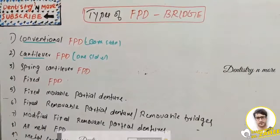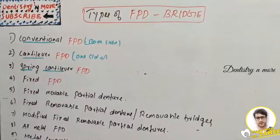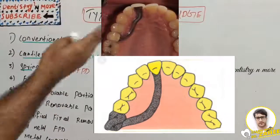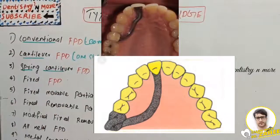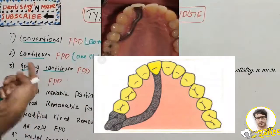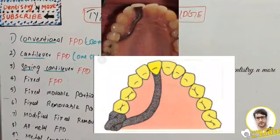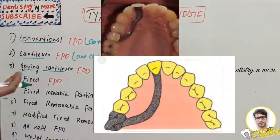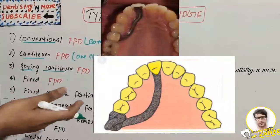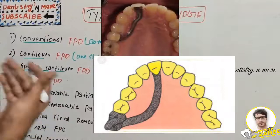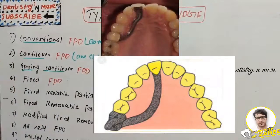The spring cantilever FPD is a special cantilever bridge exclusively designed for replacing maxillary incisors, but can support only a single pontic. If a central incisor is missing, we can use spring cantilever FPD. Support is obtained from posterior abutments — usually a single molar or a pair of splinted premolars. The main advantage is it can be used for diastema cases, and metal crown retainers requiring minimal tooth preparation can be used in the posterior to replace missing incisors.